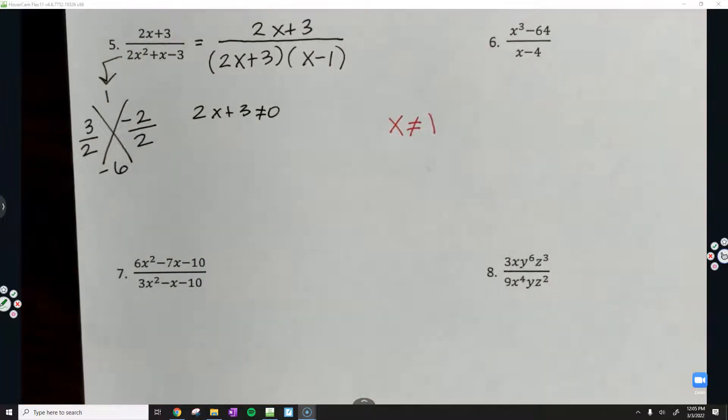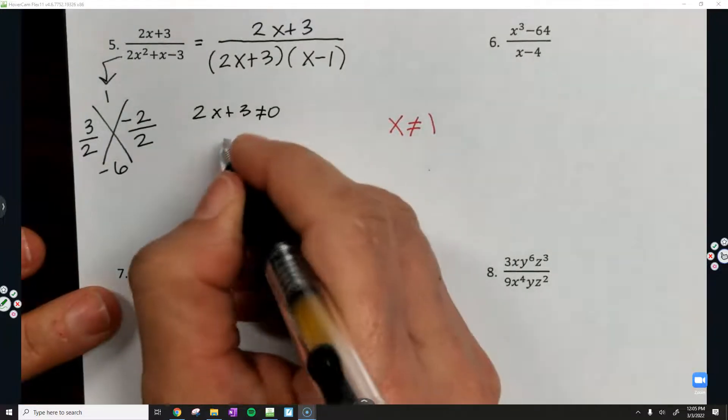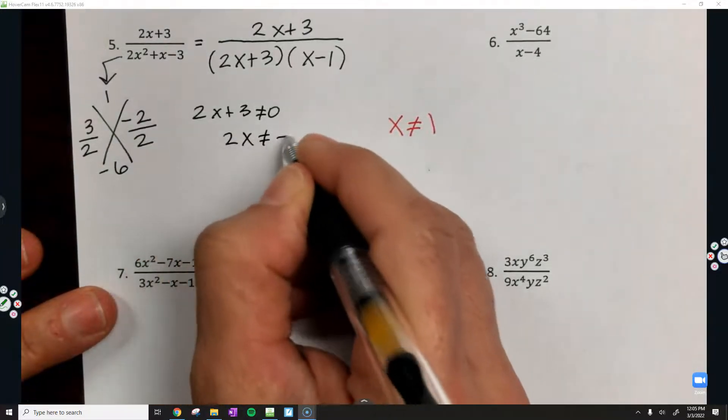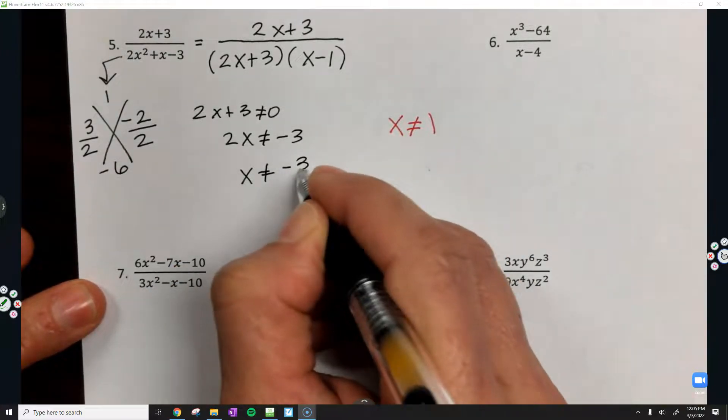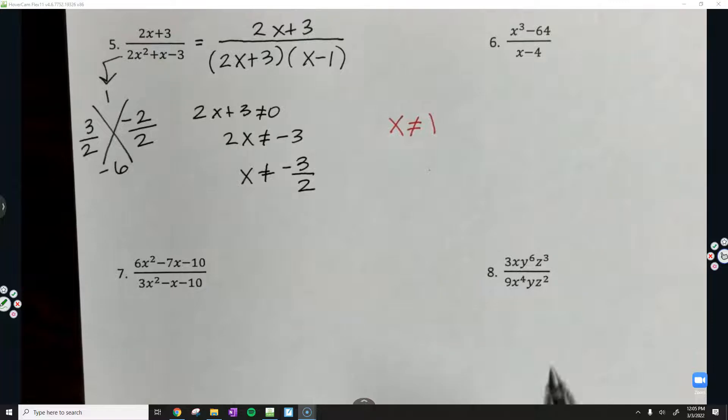I'm going to move the 3 over. I'm just going to solve for the letter x. Divide both sides by a 2. I know x cannot equal a negative 3 halves.